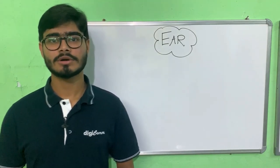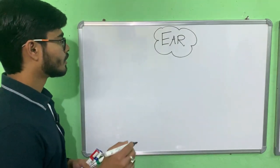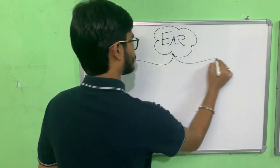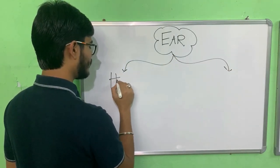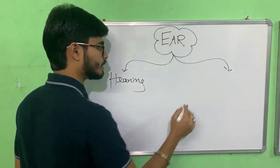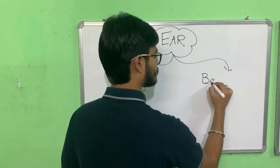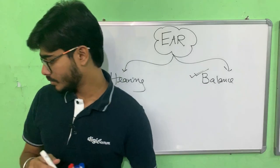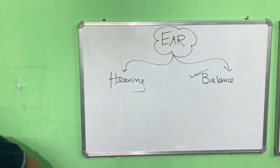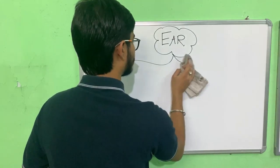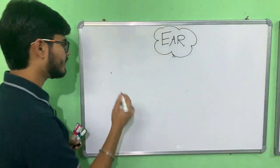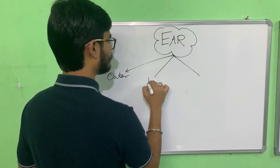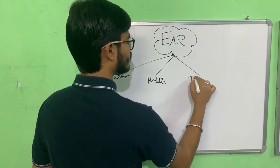Hello everyone. Today we are going to talk about the human ear. The human ear is associated with two major functions: hearing and body balance. The ear is divided majorly into three parts — the outer ear, the middle ear, and the inner ear.